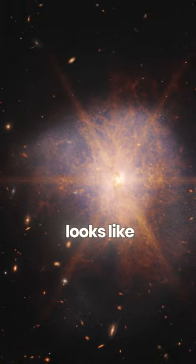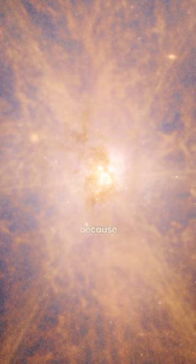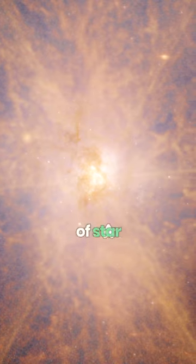This is what the collision of two galaxies looks like, captured by the James Webb. That light in the center is called a starburst region because of its absolutely insane amounts of star formation.